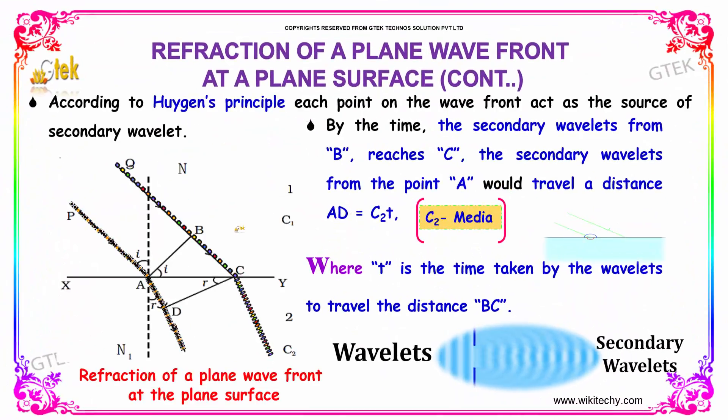According to Huygens principle, each point on the wave front acts as a source of secondary wavelets. By the time the secondary wavelet from B reaches C, the secondary wavelet from point A would travel a distance of c2 into t. But t is the time taken by the wavelet to travel the distance BC.